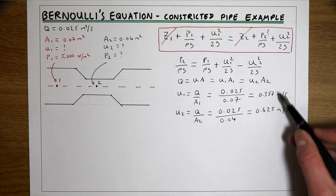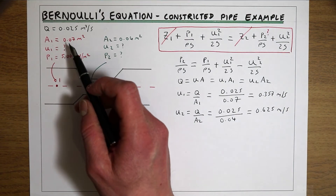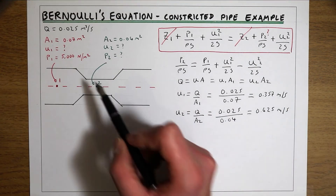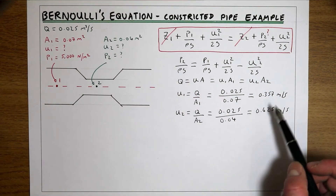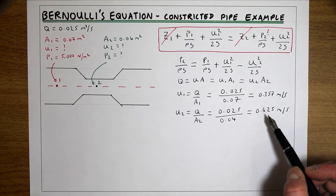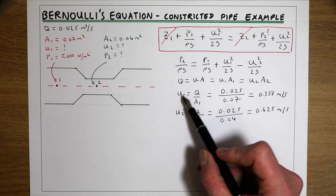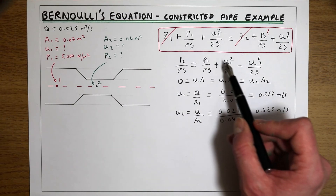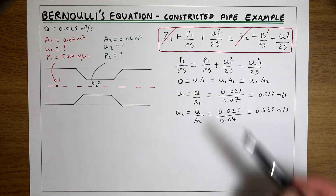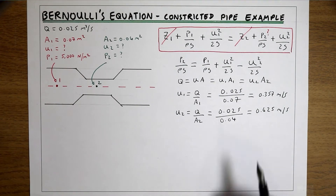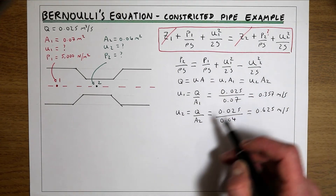U2 follows the same procedure: 0.025 divided by A2 of 0.04 m² gives us a velocity at point 2 of 0.625 m/s. We can see the basic principle of continuity here — at point 1 we have a large area and a smaller velocity, and at point 2 the area reduces so the velocity must increase to maintain the same flow rate. Now that we have U1 and U2, the only unknown in the equation is P2.